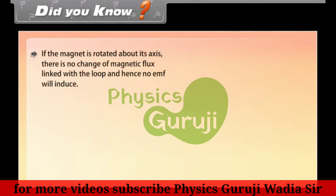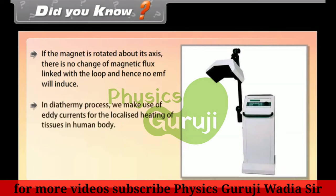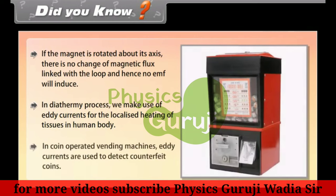Did you know? If the magnet is rotated about its axis, there is no change of magnetic flux linked with the loop and hence no EMF will be induced. In the diathermy process, eddy currents are used for localized heating of tissues in the human body. In coin-operated vending machines, eddy currents are used to detect counterfeit coins.